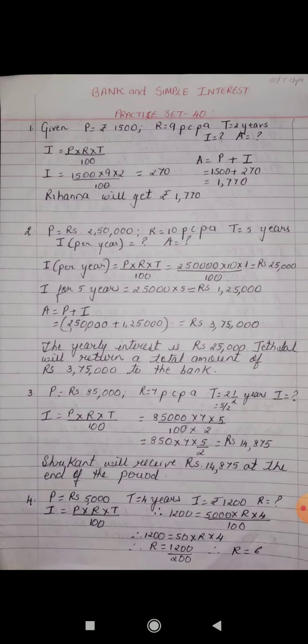The formula to calculate interest is I = P × R × T / 100. So interest = 1500 × 9 × 2 / 100. We cancel the two zeros from numerator and denominator, and after multiplying we get interest as 270 rupees. To find the amount: A = P + I = 1500 + 270 = 1770 rupees. So Rihanna will get 1770 rupees.